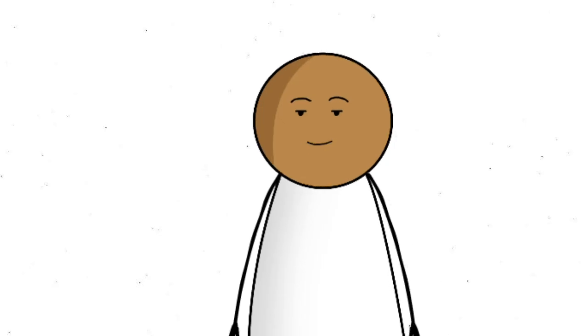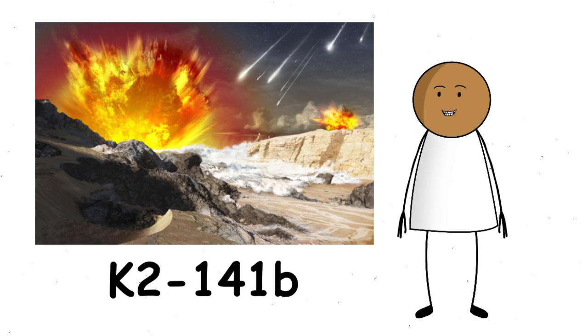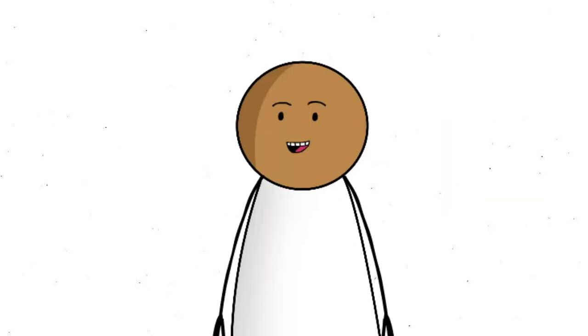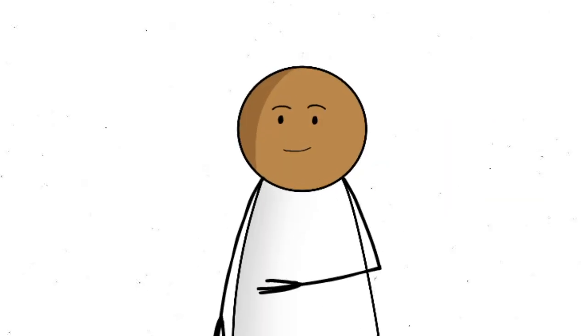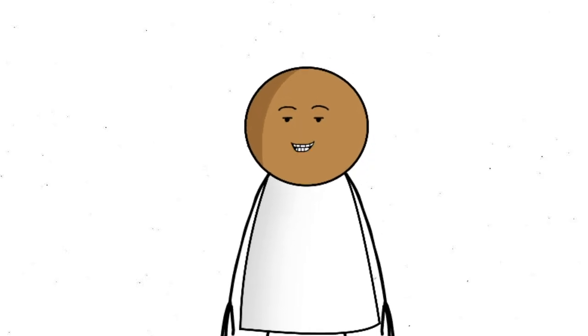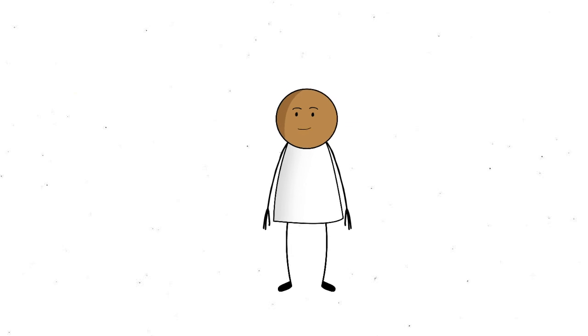But 55 Cancri e isn't the only volcanic hellscape. Other planets like K2-141b have been predicted to have entire lava oceans and rain made of rock vapor, which is every bit as horrifying as it sounds. Imagine a place where you could literally boil, then get pelted with evaporated minerals for good measure. These worlds are so wild, they make Earth's most extreme volcanoes look like a backyard grill.